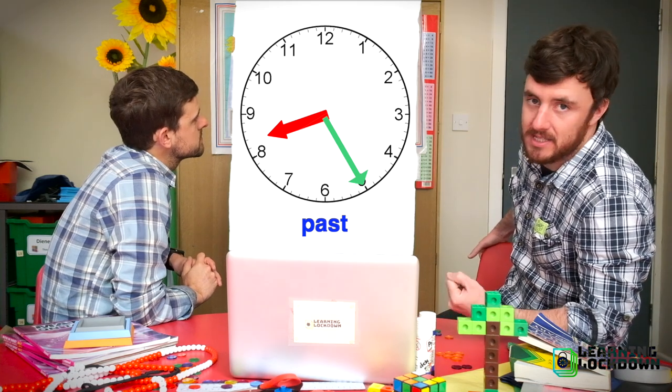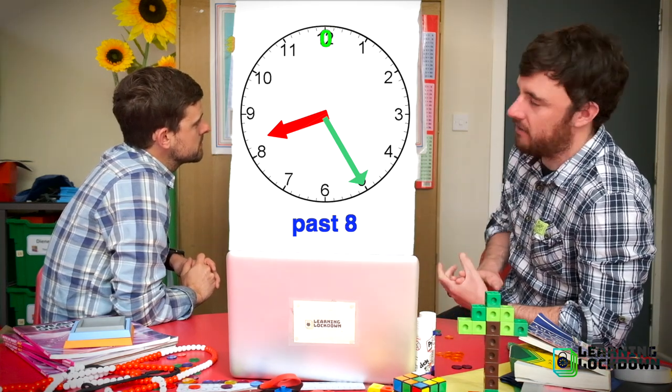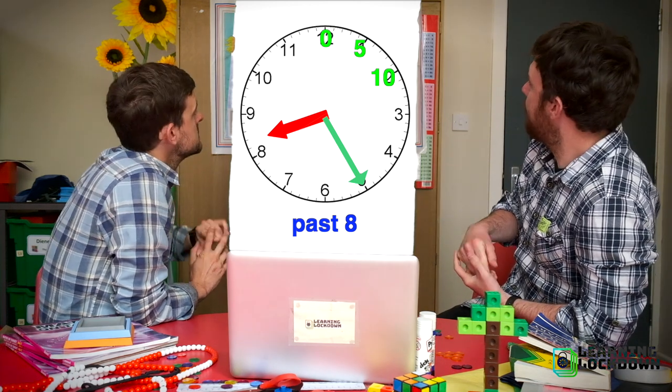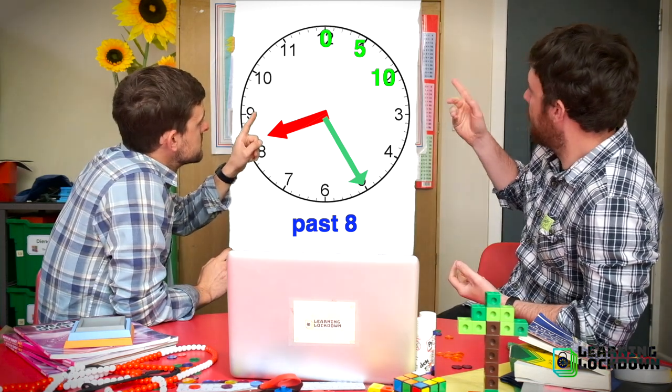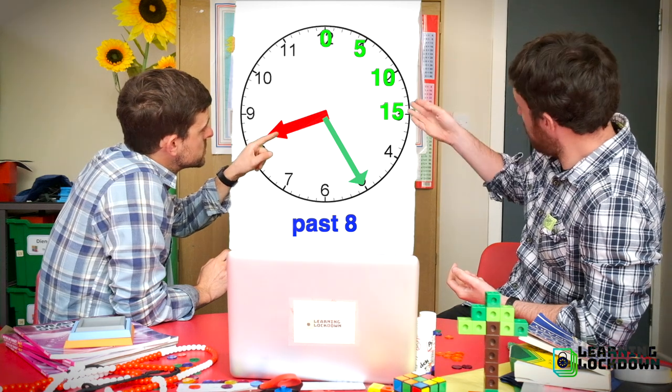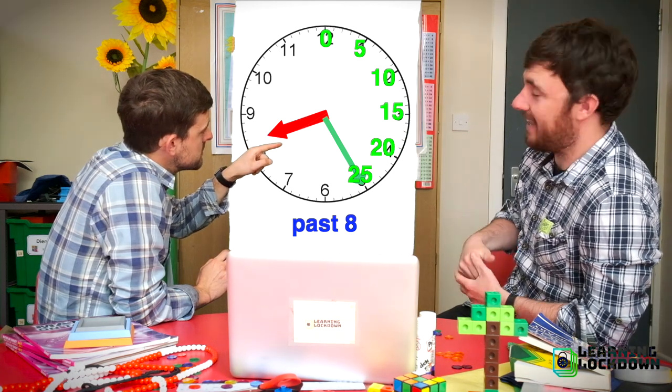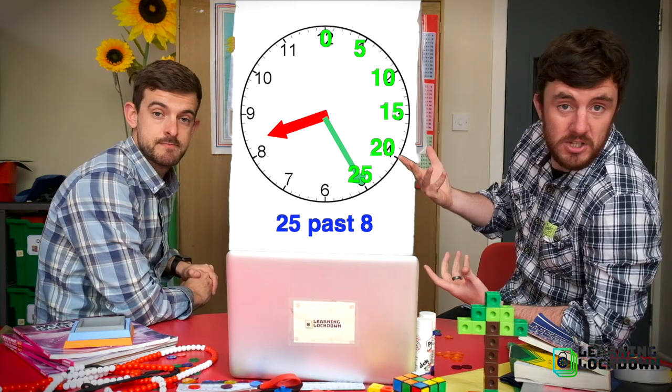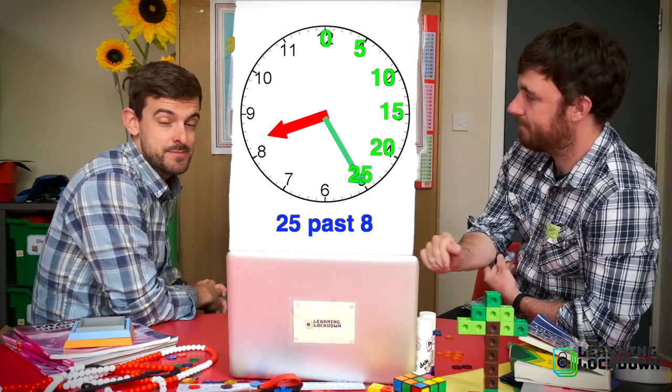Just gone past eight, so we know it's something past eight. So now we're going to go one bit to figure out. We go up to the top and start zero, zero, and we count round: five, ten, fifteen or quarter, twenty, twenty-five. So it's twenty-five past eight. Simple enough when we're doing past times.